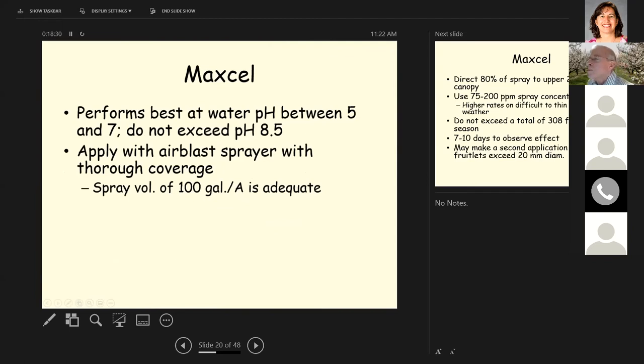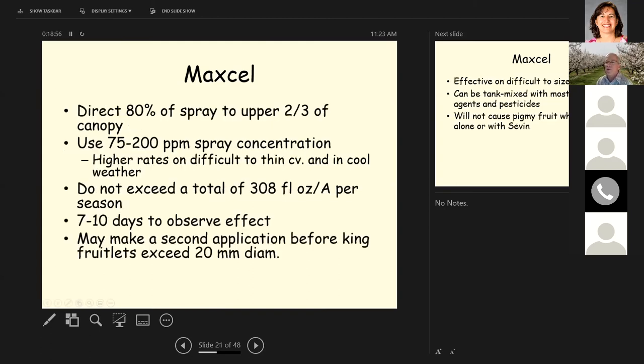Does best when your water pH is between five and seven, and you don't want to use this when your spray water pH is above 8.5. Apply this with an air blast sprayer with thorough coverage, just like with the other thinning compounds. And a spray volume of a hundred gallons per acre is generally adequate for this. We don't have a lot of leaves on the trees and they're a little easier to cover at this stage as opposed to later in the season when we have more growth.